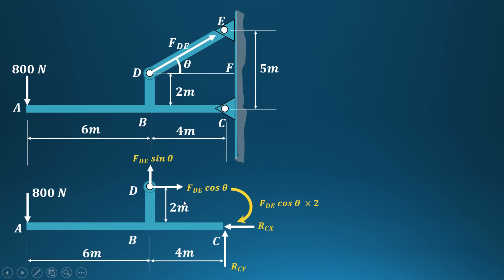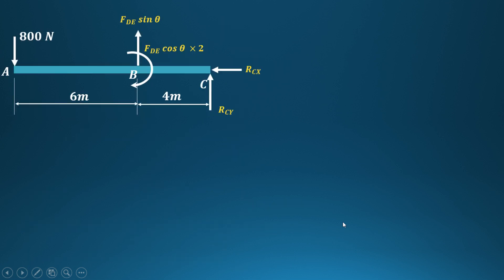For the calculation of vertical reaction, we consider this moment directly acting at point B. For the horizontal reaction, we consider the horizontal force FDE·cos θ along with the reaction at C, that is RCx.